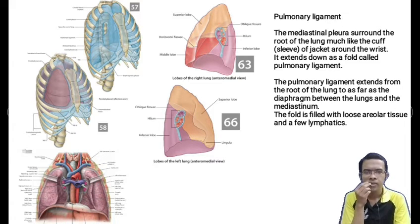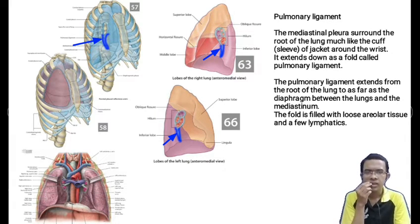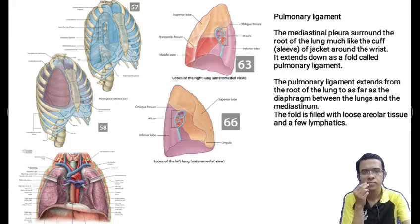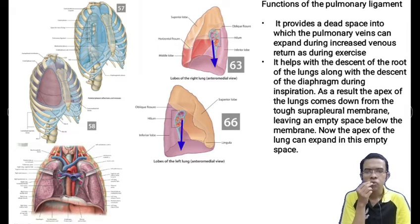The pulmonary ligament: the mediastinal pleura surrounding the root of the lung, much like the cuff or sleeve of a jacket around the wrist, extends down as a fold called the pulmonary ligament. It extends from the root of the lung as far as the diaphragm, between the lungs and the mediastinum. The fold is filled with loose areolar tissue and a few lymphatics. Its functions are: to provide a dead space into which the pulmonary veins can expand during increased venous return as during exercise; and to help with the descent of the root of the lung along with the descent of the diaphragm during inspiration, allowing the apex of the lung to expand in the empty space left below the suprapleural membrane.